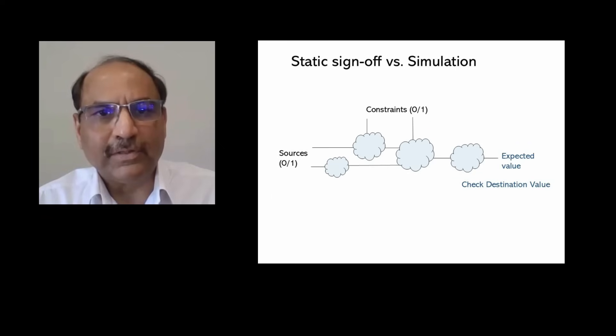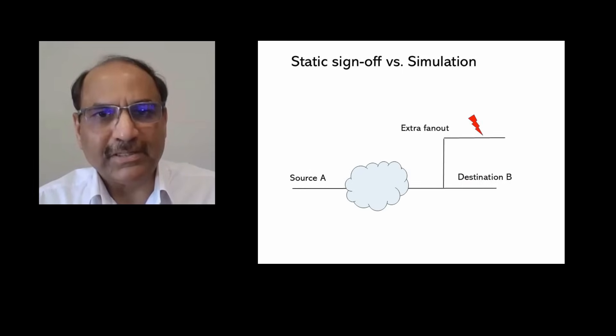Connectivity static sign-off's user-defined rules cover all conditions exhaustively, but simulation only covers conditions specified in the test vectors. Moreover, certain checks are feasible only in static sign-off and not in simulation. For example, identifying an extra fanout.